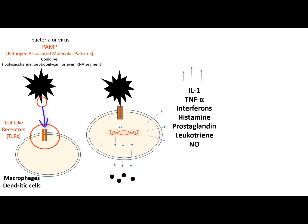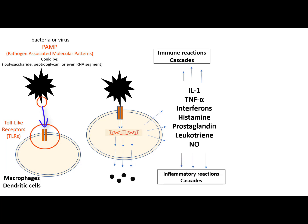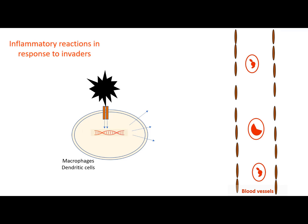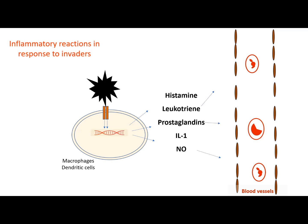These structurally different mediators trigger a wide range of immunological inhibitors and inflammatory cascades. The inflammatory mediators produced by macrophages such as histamine, leukotriene, prostaglandins and nitric oxide produce significant changes in the blood vessels and surrounding nerves.